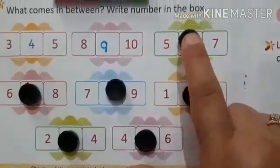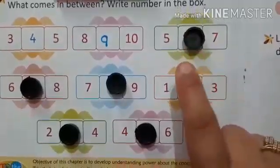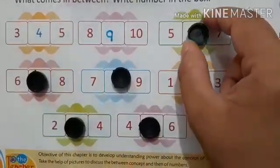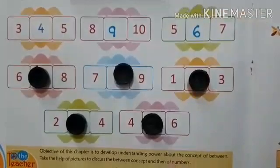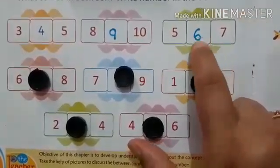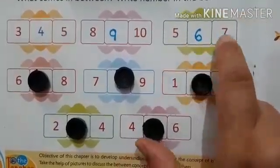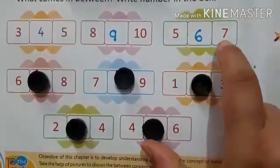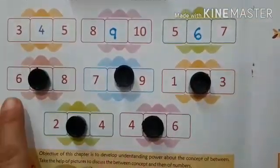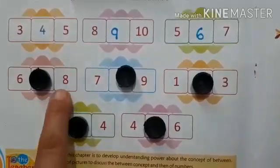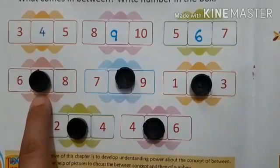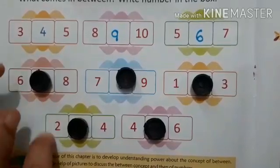Next one. What comes in between 5 and 7? That is 6. After writing this 6, you have to read once: 5, 6, 7. Next, 6 and 8 - what comes in between 6 and 8? That is 7.